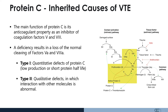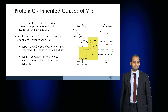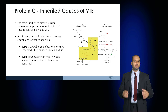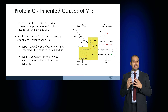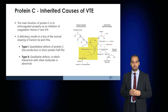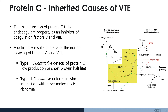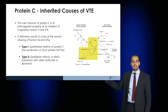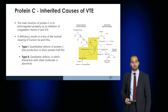Type I is a quantitative defect where there is a low production of this protein with a short half-life. Type II is a qualitative defect in which protein C has abnormal interactions with other molecules. If you have reduced protein C, you will have increased activation of both factor V and factor VIII, resulting in thrombin generation and clot formation.